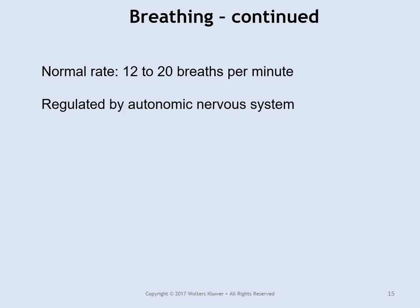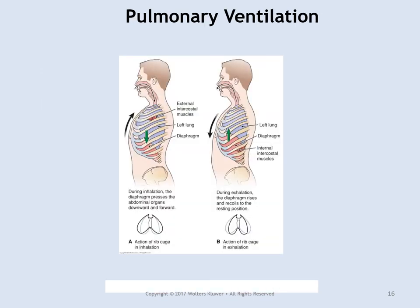Normal rate of respiration is 12 to 20 breaths per minute, regulated by the autonomic nervous system. During inhalation, the diaphragm presses down and air moves into the lungs. During exhalation, the diaphragm relaxes and moves up, pressing air up and out of the mouth.